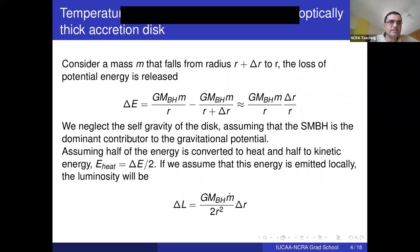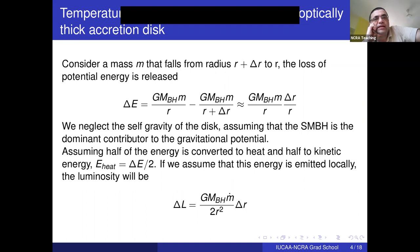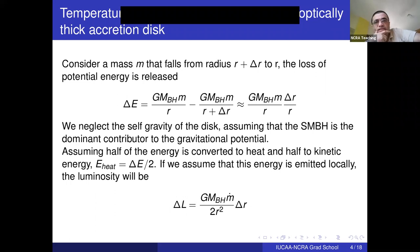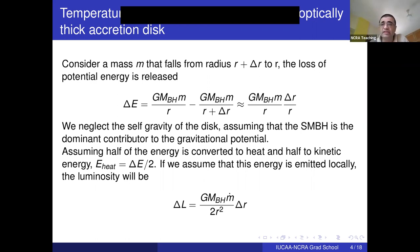Consider a mass m falling from radius r + δr to radius r. The loss of potential energy is calculated by subtracting the potential energy at r + δr from that at r, giving an expression proportional to GM/r. This is an approximation where we neglect the self-gravity of the disk, assuming the biggest contributor to the gravitational potential is the supermassive black hole. Then, if half of this energy is converted into internal energy of the gas, you get an expression: G × M_BH × Ṁ divided by 2r² × δr.